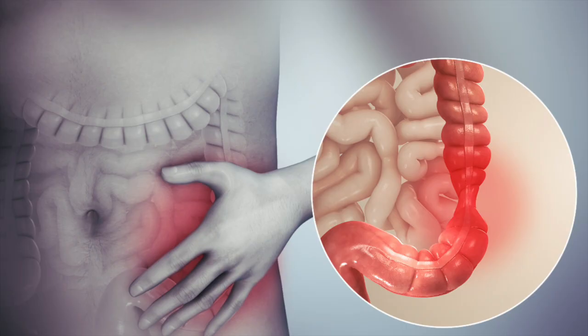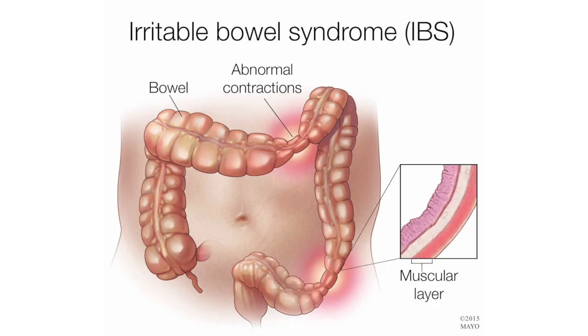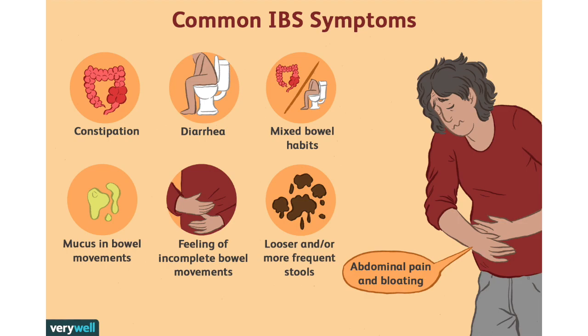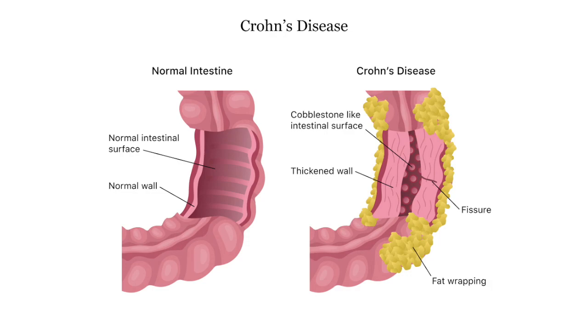Moving on to the more long-term conditions and diseases, irritable bowel syndrome, or simply known as IBS, is when the colon muscle contracts either more or less than the normal amount. Therefore, people with IBS experience cramps, extra gas, and stomach pain. Also, it is important to know that Crohn's disease is the permanent form of IBS.